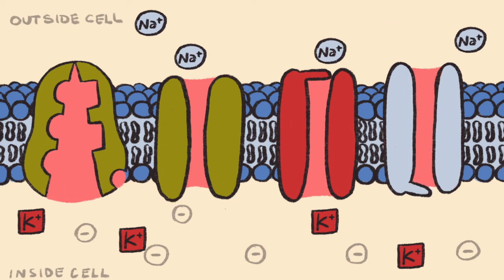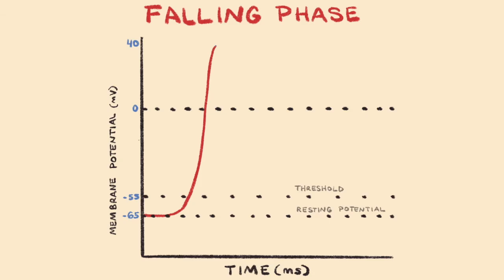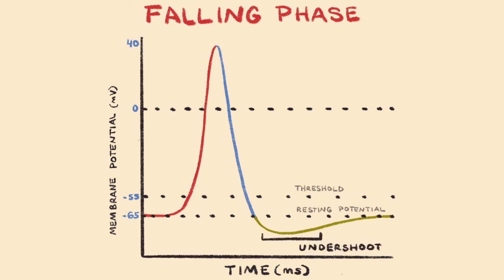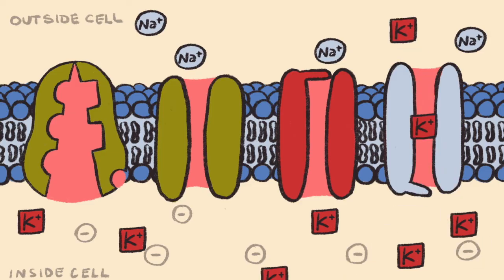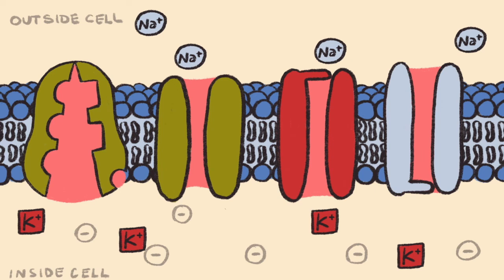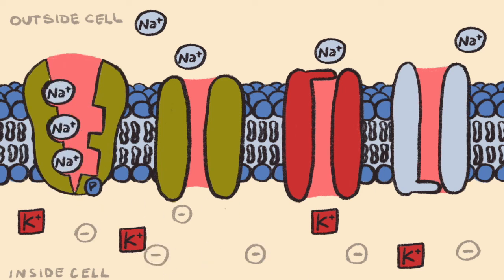As these processes continue, the neuron quickly passes the normal resting membrane potential of negative 65 millivolts and begins to approach negative 90 millivolts, which is the maximum extracellular potassium concentration possible. Passing normal resting membrane potential is termed the undershoot, and this is caused by voltage-gated potassium channels remaining open a bit too long. Remember that voltage-gated potassium channels are slow to open, and therefore they're also slow to close.